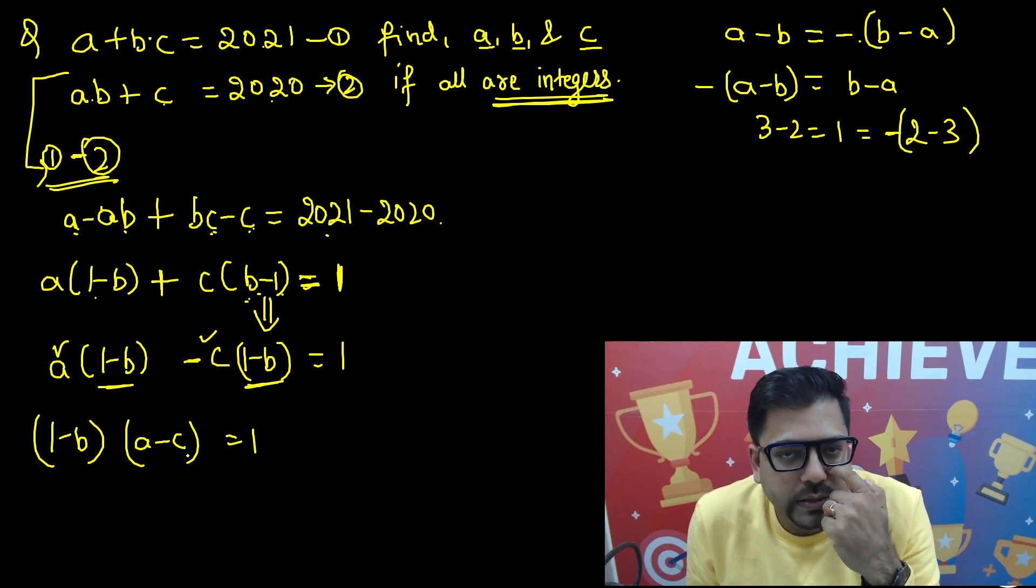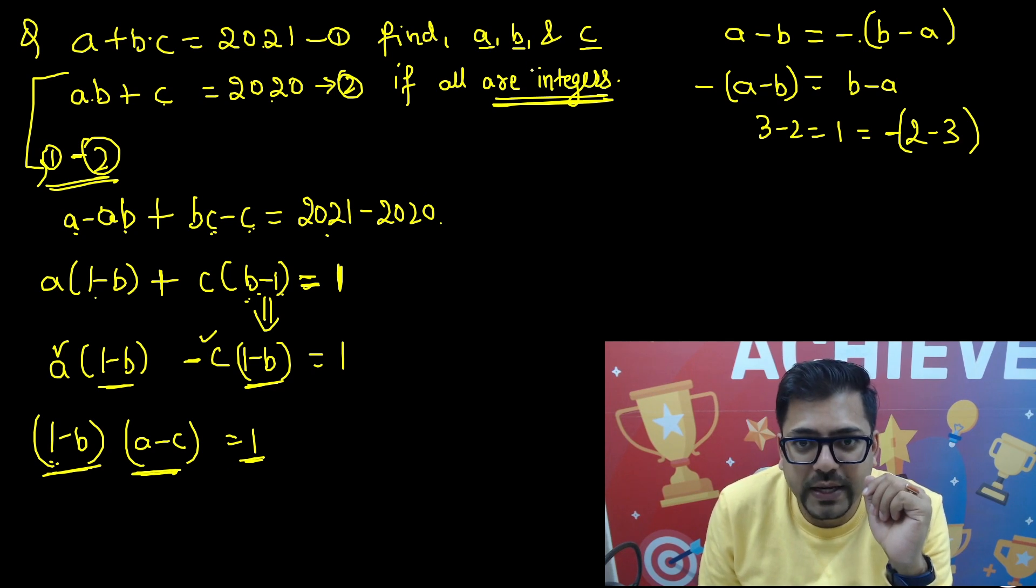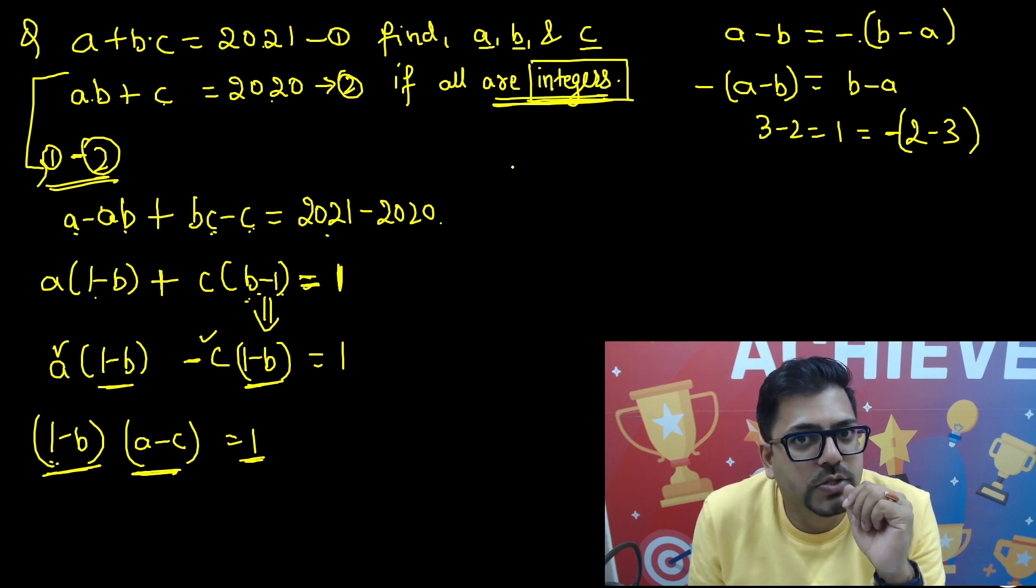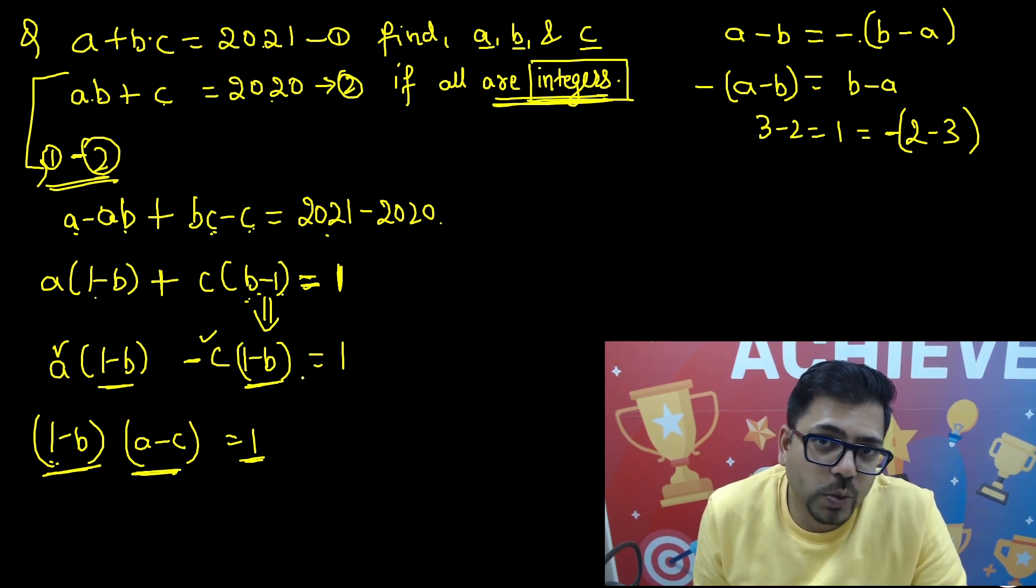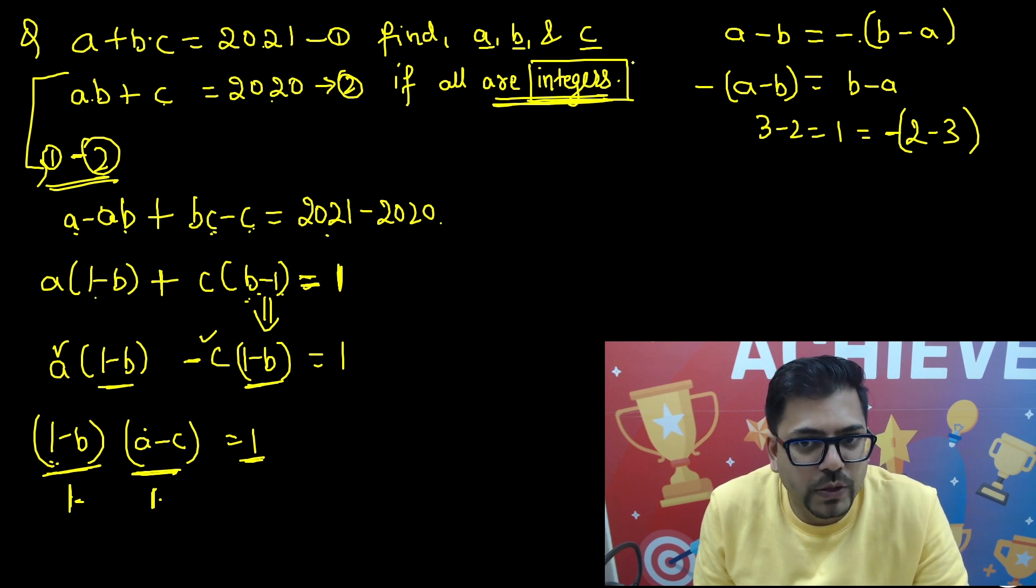So if you have understood this, now you can take 1 minus B common. Very simple. And the remaining is A and here is C, A minus C. And that equals 1. Now from here we can get an answer. See, 1 minus B into A minus C, there are two brackets and their multiplication is giving me 1. And the condition is that all of them should be integers. So if all of them should be integers, there are only two possibilities.